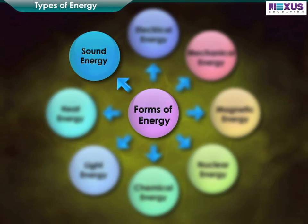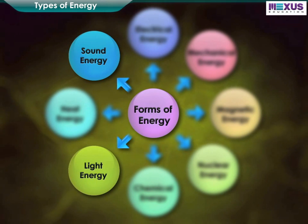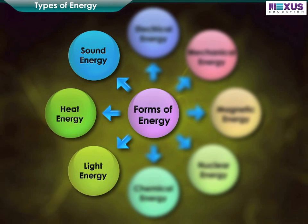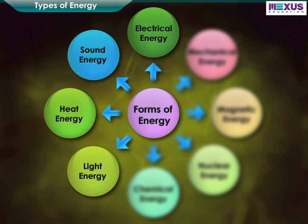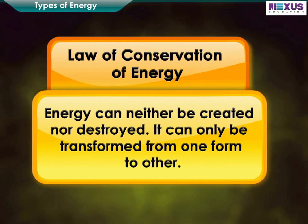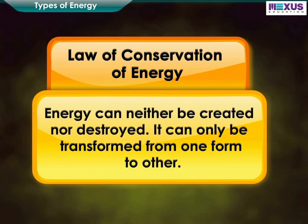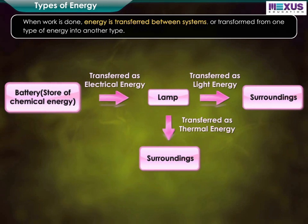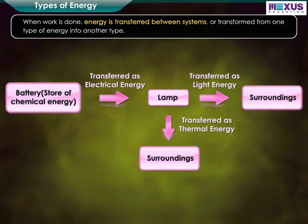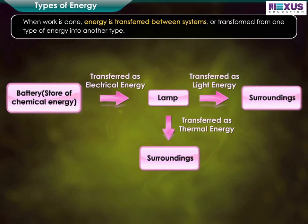Sound energy, light energy, heat energy, and electrical energy are forms of energy in action. The quantity of energy in the universe remains constant. When work is done, energy is transferred between systems or transformed from one type of energy into another type.